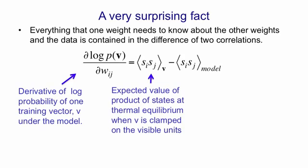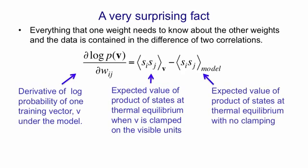That is, how often are i and j on together when v is clamped in the visible units and the network is at thermal equilibrium, minus the same quantity but when v is not clamped on the visible units. So because the derivative of the log probability of a visible vector is this simple difference of correlations, we can make the change in the weight be proportional to the expected product of the activities averaged over all visible vectors in the training set, that's what we call data, minus the product of the same two activities when you're not clamping anything and the network has reached thermal equilibrium with no external interference.